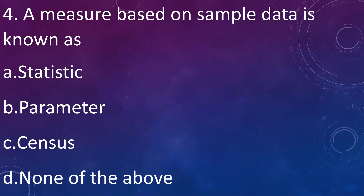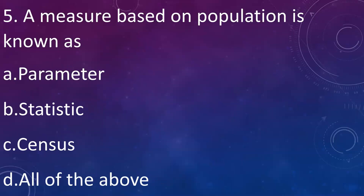A measure based on sample data is known as: A: statistic, B: parameter, C: census, D: none of the above. Answer is A: statistic — sample data measures are called statistics. Then, a measure based on population is known as: A: parameter, B: statistic, C: census, D: all of the above. Answer is A: parameter — population measures are known as parameters.